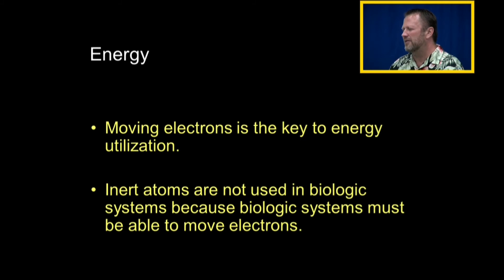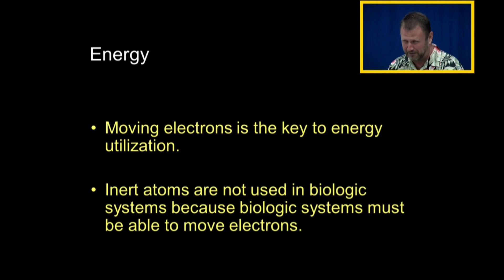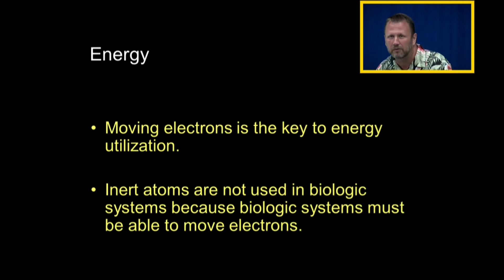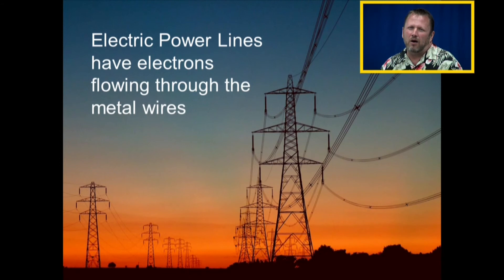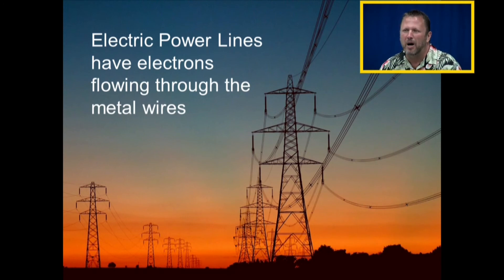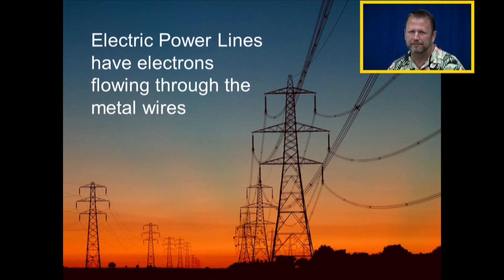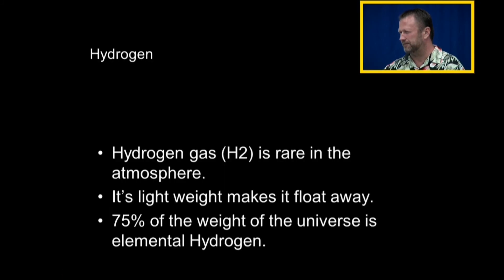Moving electrons is the key to energy utilization. The reason inert atoms are not used in biologic systems is because biologic systems must be able to move electrons. We don't put windmills where the wind doesn't blow. Your body moves electrons so it can capture that energy — just like a windmill. Electric power lines buzz and crackle because of electrons moving through copper wires. Moving electrons is energy, and that's what this lecture is about.